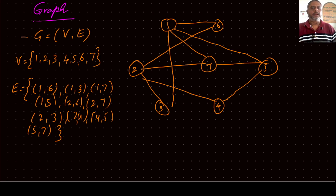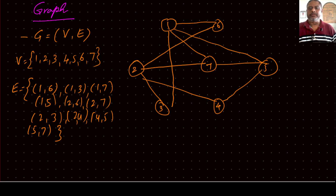So this is a graph. You can visualize a graph in many ways — for example in town planning or PWD, where nodes represent towns and edges represent roads. As a computer engineer, you can visualize nodes as computers and edges as interconnections, representing connectivity between systems.